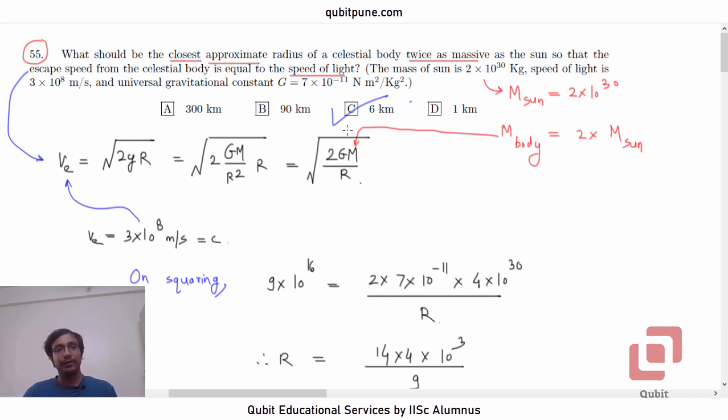But it required you to know the formula for the escape velocity of the satellite or of the body. Yes, so question 55, option C. In our next video, we will solve question number 56.